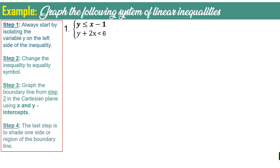Now let's have an example. Graph the following system of linear inequalities. The inequalities are y is less than or equal to x minus 1, and y plus 2x is less than 6. To graph this system, we will graph them first separately — the first inequality, then the second inequality, then combine the two graphs.